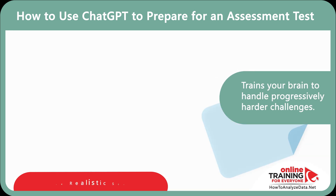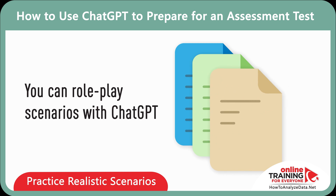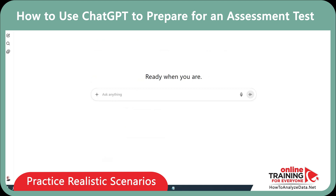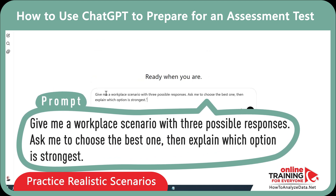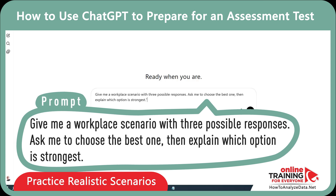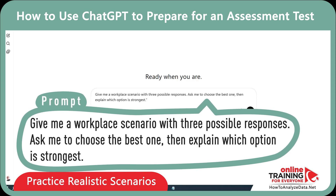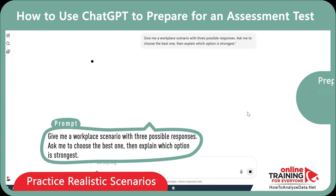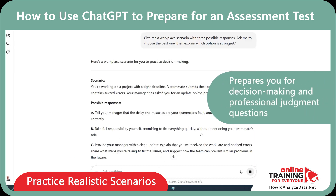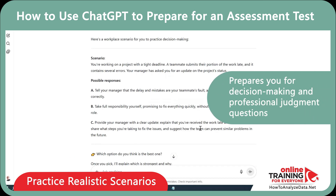If you're preparing for a situational judgment test and need to practice with realistic scenarios, here's a role-based prompt: 'Give me a workplace scenario with three possible responses. Ask me to choose the best one, then explain which one is the strongest.' This practice mode prepares you for decision-making and professional judgment questions.